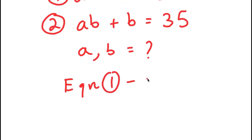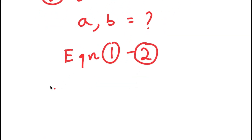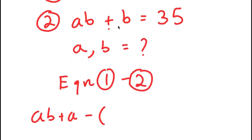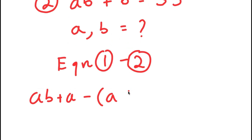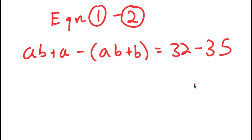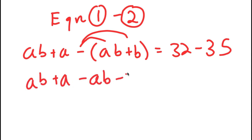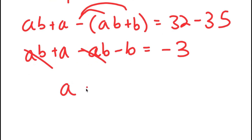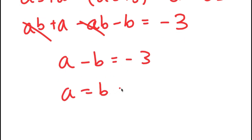So, equation 1 minus equation 2: AB plus A minus (AB plus B) equals 32 minus 35. I'm first going to distribute the negative sign, so now I get AB plus A minus AB minus B equals 32 minus 35, which equals negative 3. I can cancel out AB and negative AB, leaving A minus B equals negative 3. And this means that A equals B minus 3.